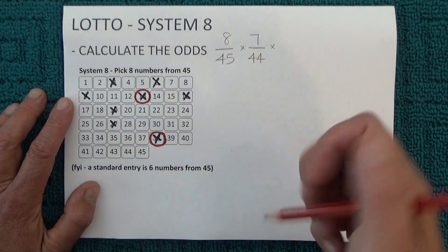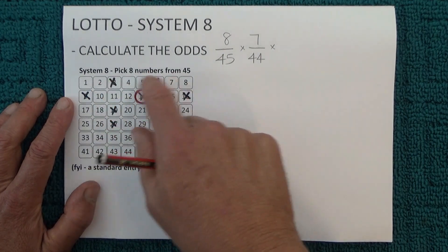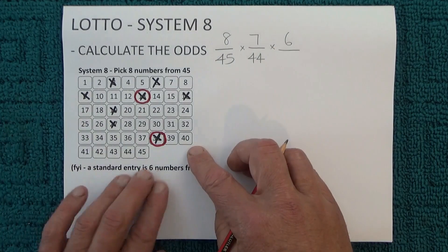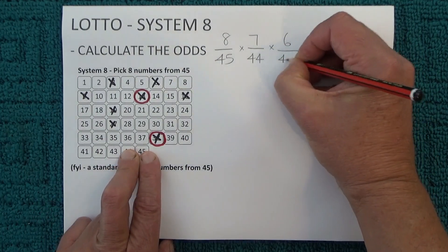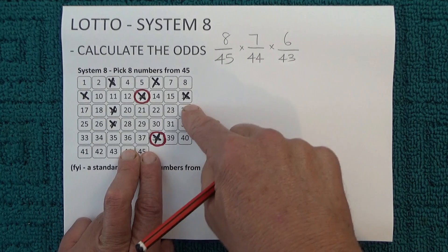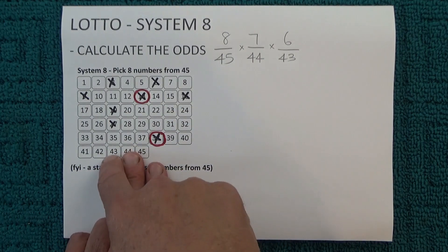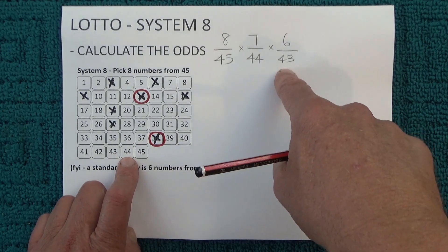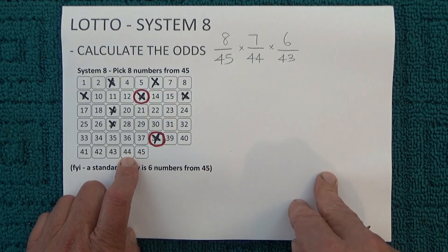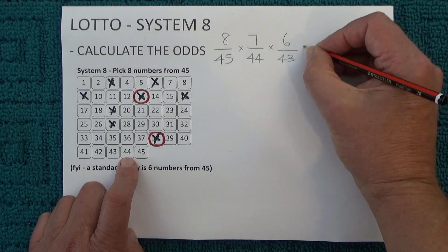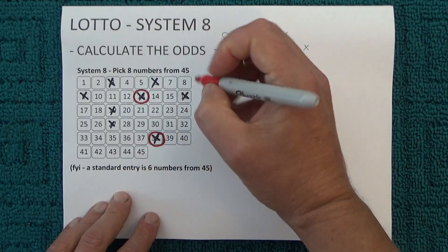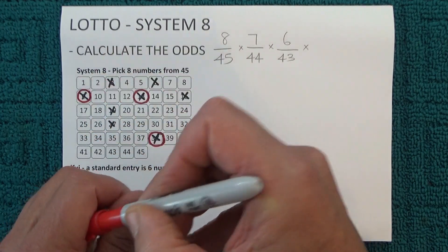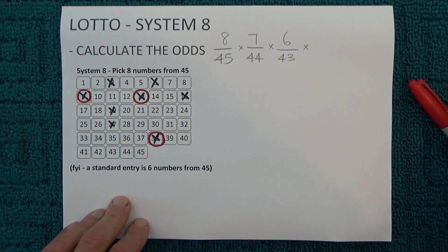Now when the third number's drawn, you're left with six chances in 43, because you've got six unmatched numbers and 43 numbers left in the barrel — two numbers have already been drawn. So you've got six chances in 43 of matching the third number that's drawn. And to show one of those numbers has been matched, I'll just randomly mark off another one of those numbers.